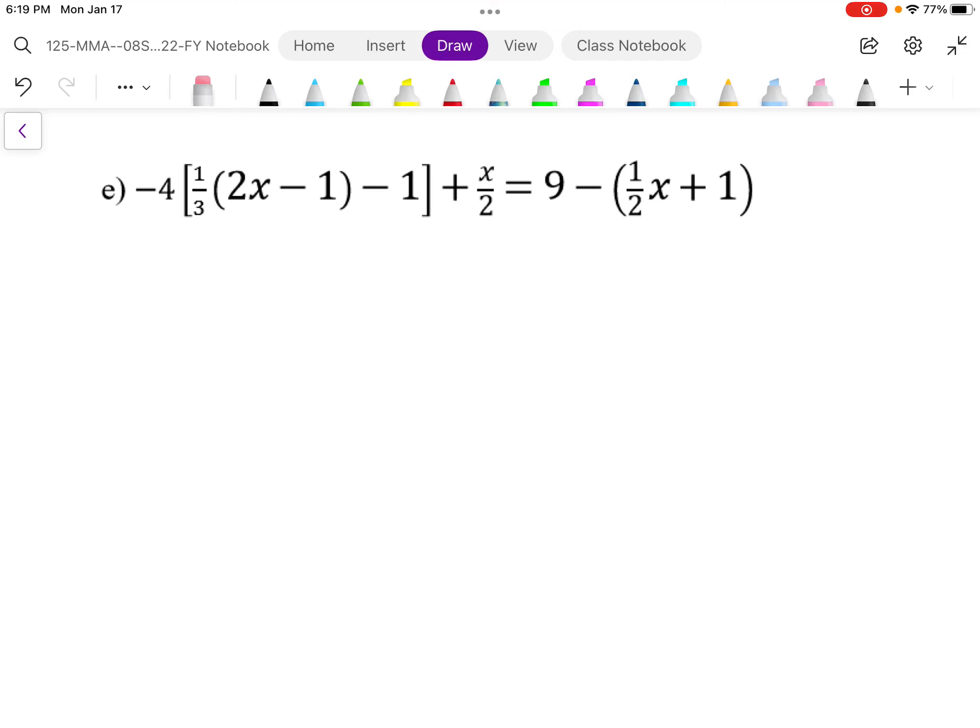So I'm going to multiply by the lowest common denominator, which is 6, or times 2 times 3, and then I'm going to distribute into here. Now when we distribute, we have to be careful. The rule is we distribute across plus and minus. We do not distribute across this multiplication here.